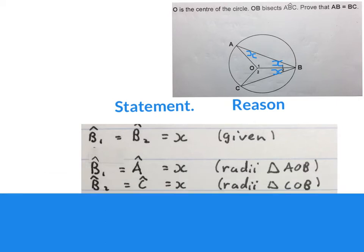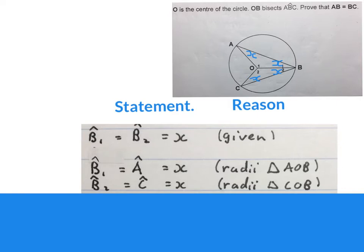Then we can write angle B2 is equal to angle C, also equal to X, because of radii again — so B2 is equal to C because of the two radii over there. We write it in on the sketch. Please stop the video and just get your head around the truth of what was written here.